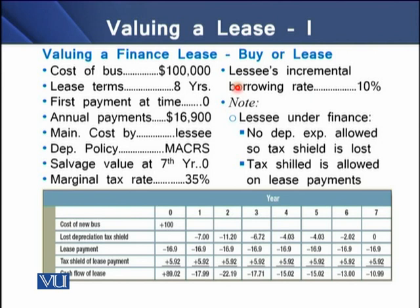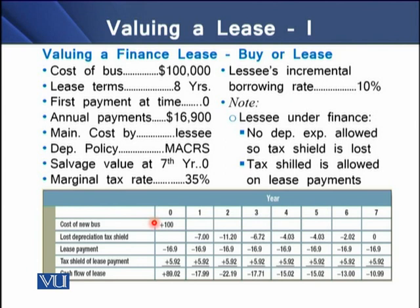It is notable that the lessee under a finance lease is not allowed to use the tax shield on depreciation expense — so in this case the lessee forgoes the tax shield. Instead, tax shield is allowed on the lease payments. On the left half you can see a schedule over the lease terms. In this schedule we have payment for the new bus as its cost, tax depreciation which is a lost tax shield because the lessee is not allowed it, lease payments after the lessee goes for the lease, then tax shield on these lease payments, and finally the cash flows over the lease term from time period zero to year seven.